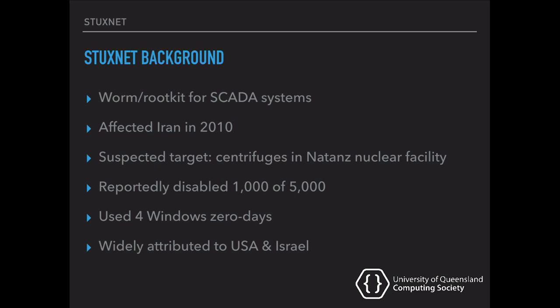Zero days can be quite valuable, especially if they affect big products like Microsoft Windows, which is one of the most widely deployed pieces of software. The fact that Stuxnet chained together not just one but four zero days in Windows meant that whoever was behind it was extremely resourced. The other thing about a zero day is once you use it, it's burned. As soon as you deploy your software and someone detects it and takes it back to Microsoft, they'll find and deploy a patch. So once you use a zero day, it is fairly quickly no longer useful.